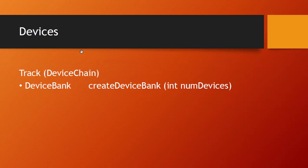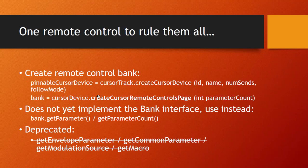Now back to our main topic: remote parameter banks. It's pretty similar to what we did in the last tutorial about track banks. In a similar way you can create device banks on the track to monitor all devices, but that might be too much. What we will do instead is follow the selected device on your selected track. There is a function which creates a pinnable cursor device on your cursor track. This has similar parameters to creating a cursor track — you give it an ID, a name, which is also what appears in the pinnable area we saw just before.